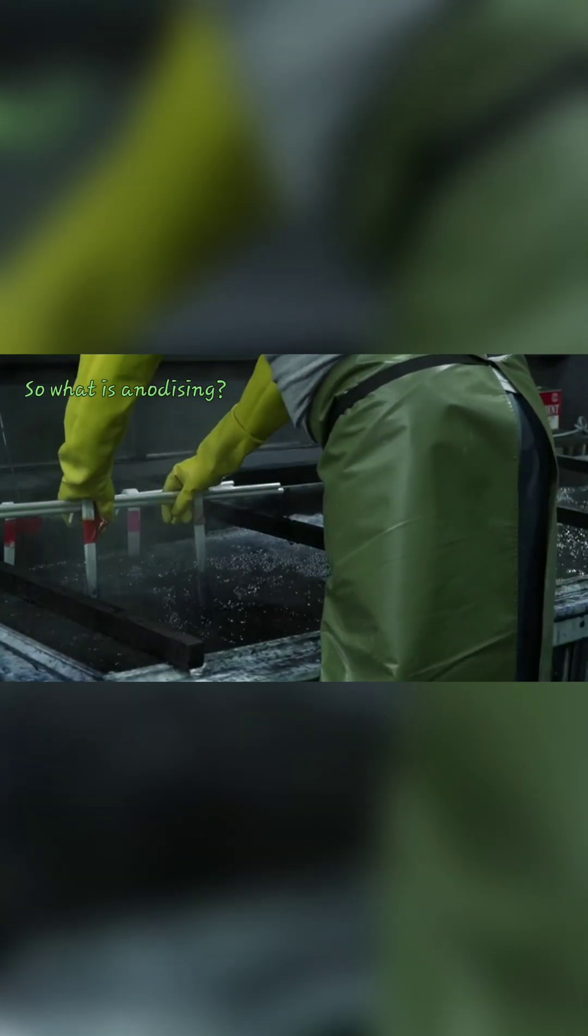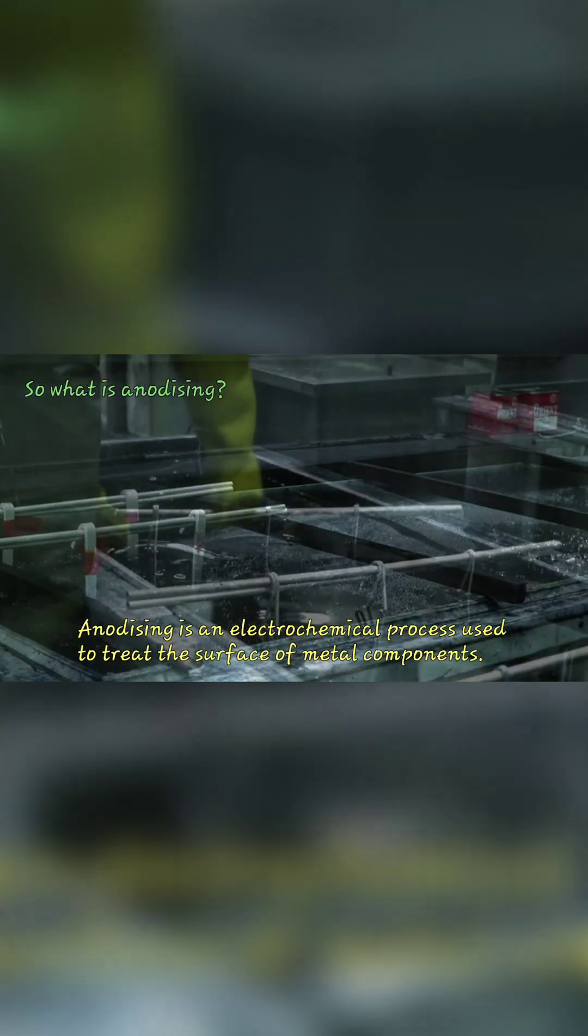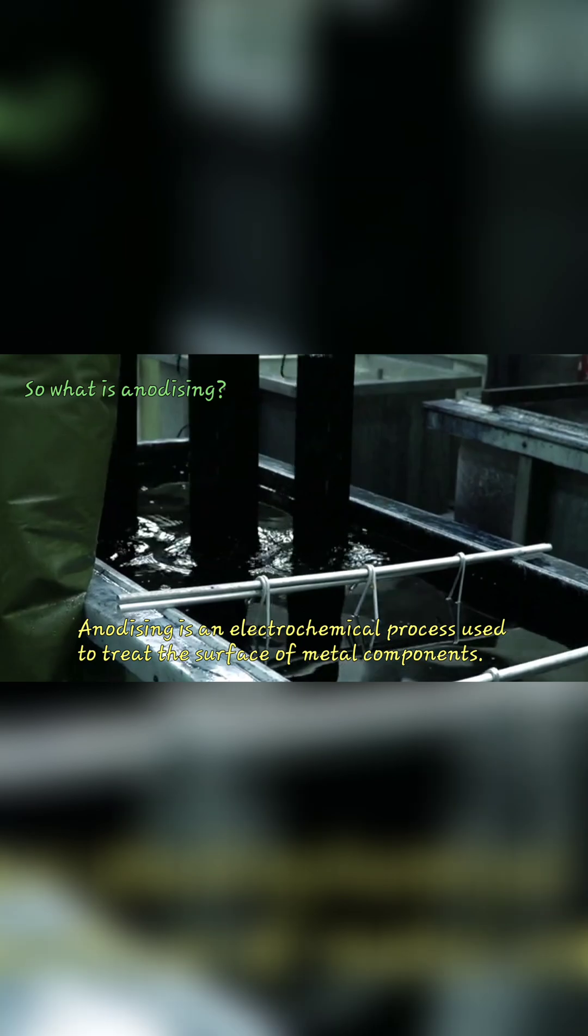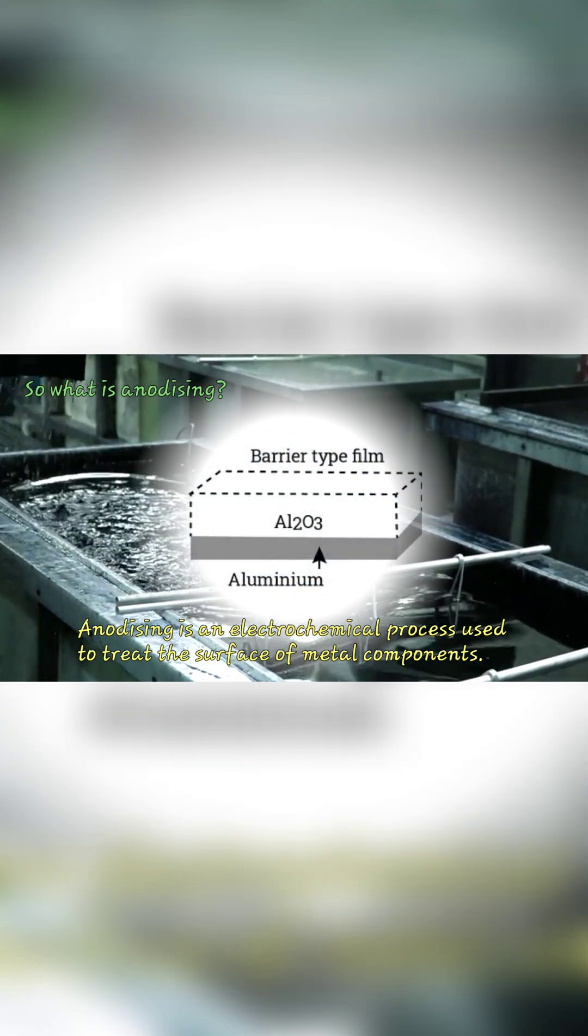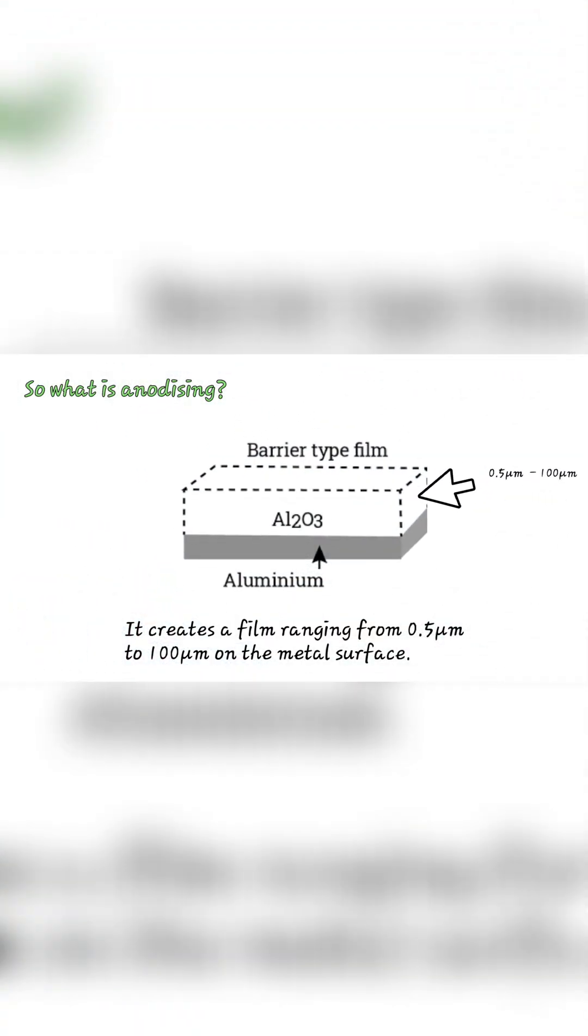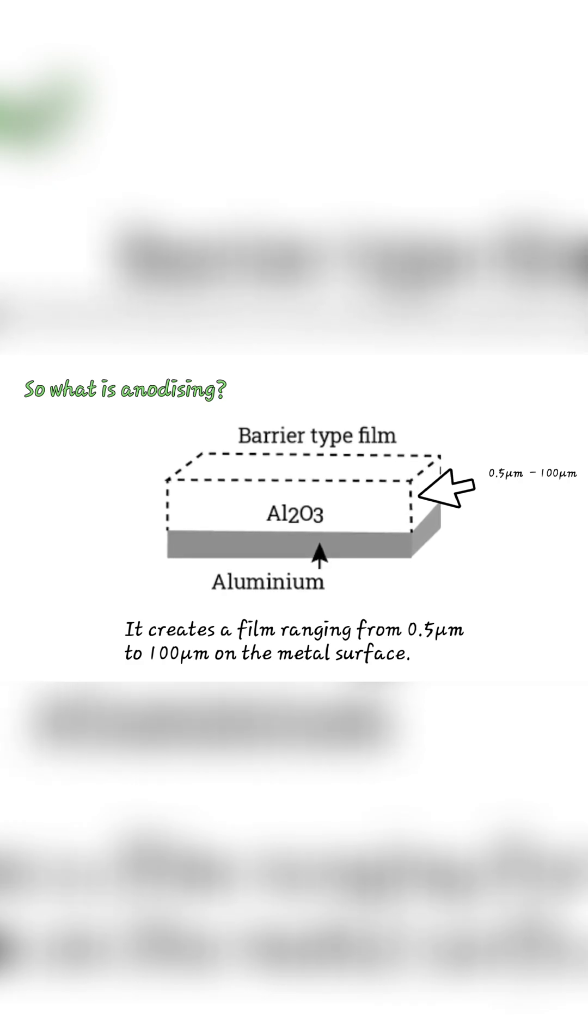So what is anodizing? Anodizing is an electrochemical process used to treat the surface of metal components. It creates a film ranging from 0.5 micrometers to 100 micrometers on the metal surface.